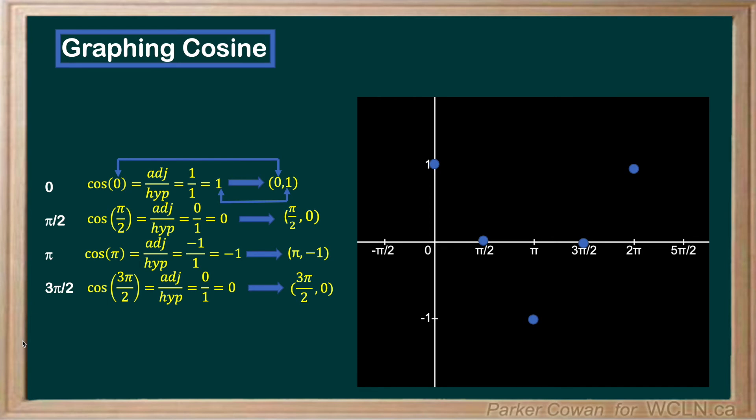In the interest of time, I'm going to fill in the rest of the intermediate points on the graph, so we can see the shape of the cosine curve.